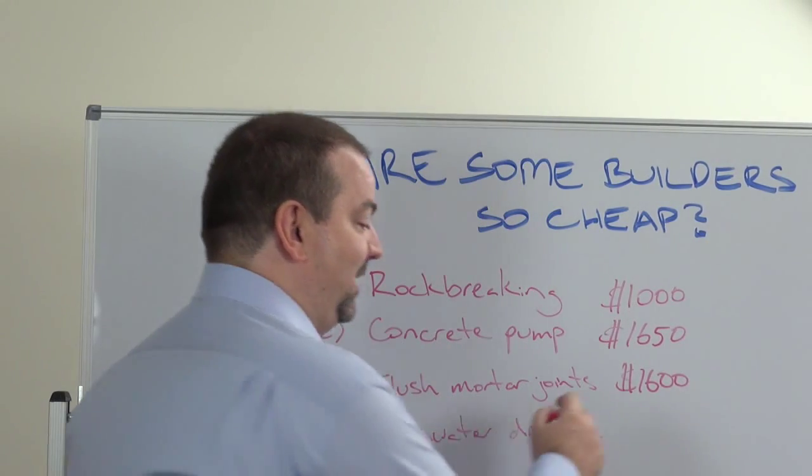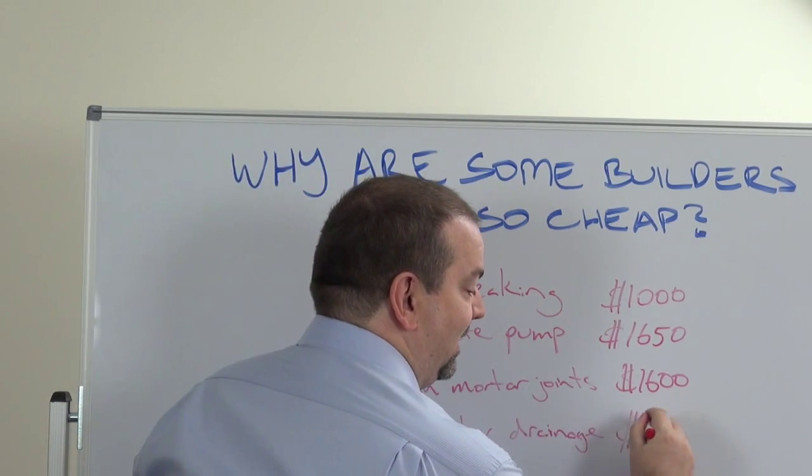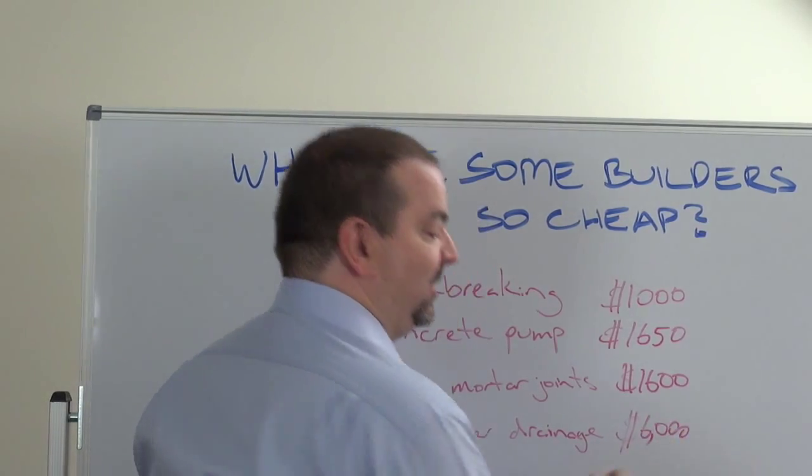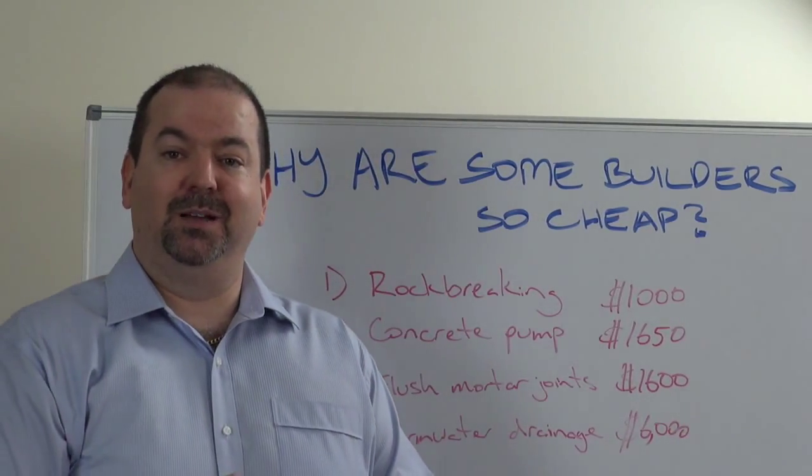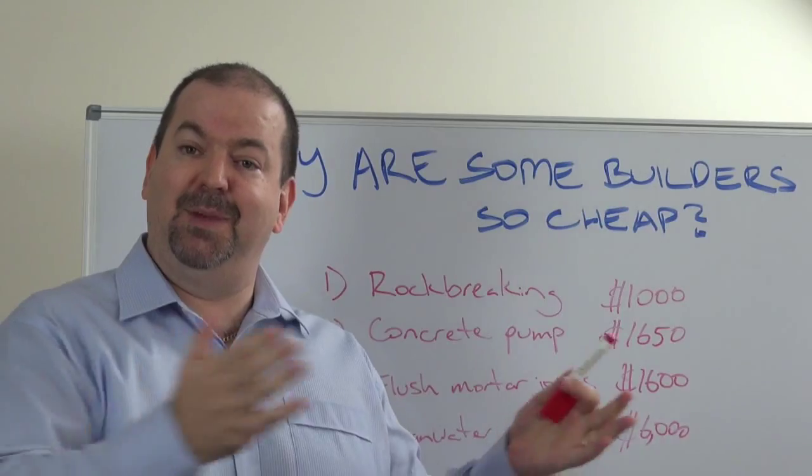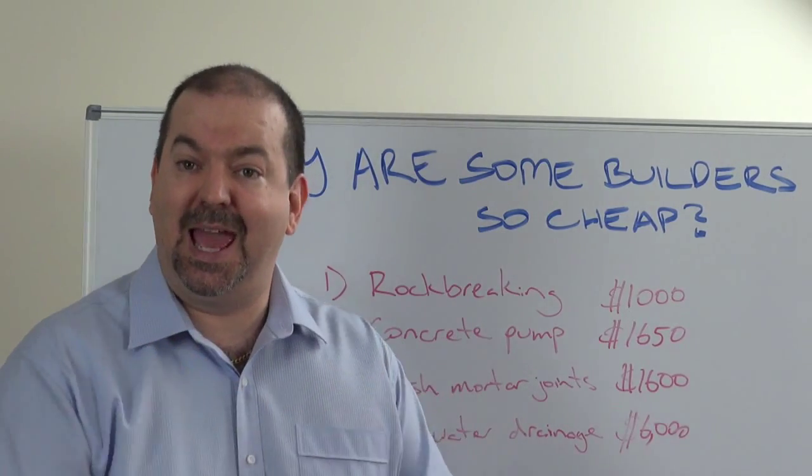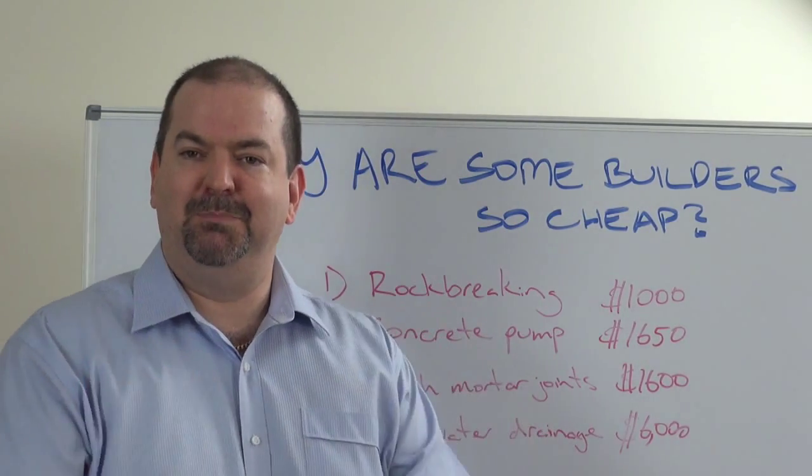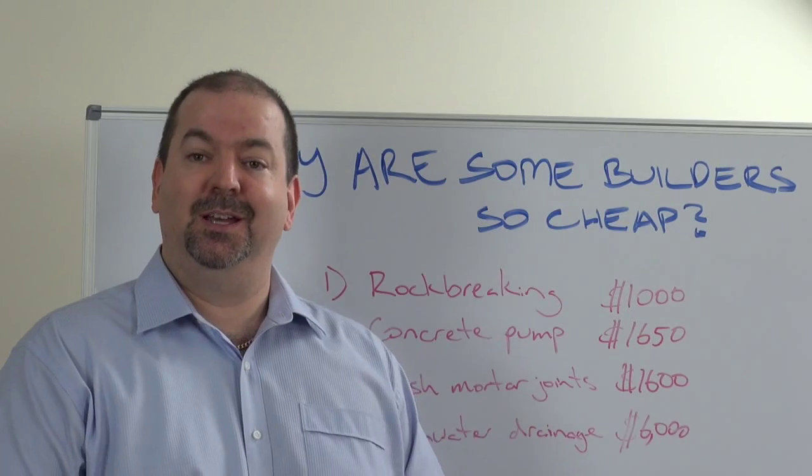They might quote your price of the house, they may even give you the siteworks cost, and like one person recently found out, they got charged $6,000 for their stormwater and it was mandatory because it came back as a council condition. The builder just imposed that $6,000 cost onto them.